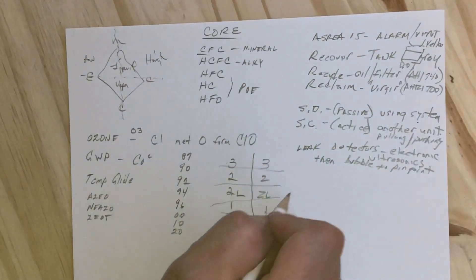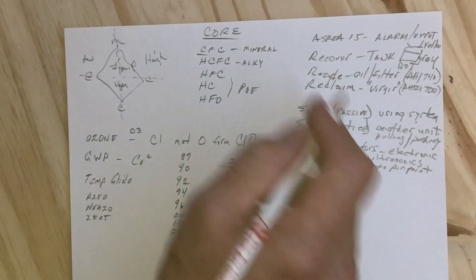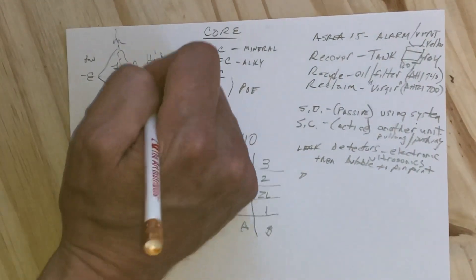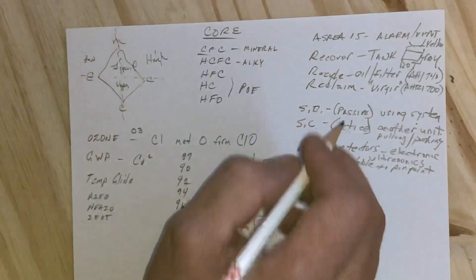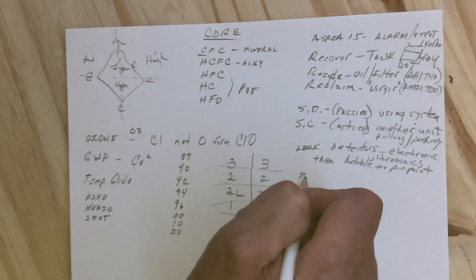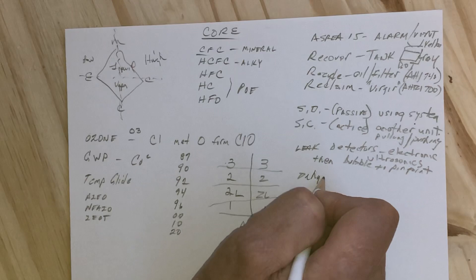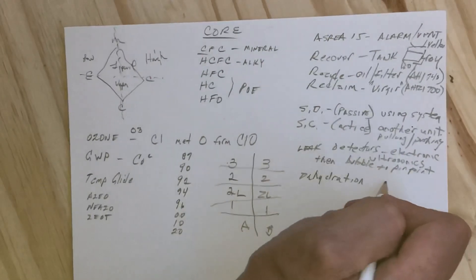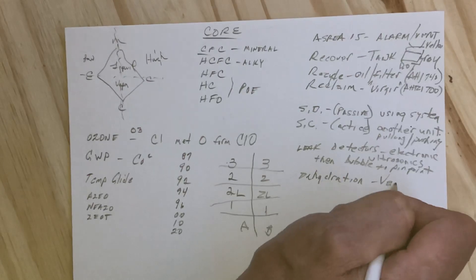After we recover, recycle, reclaim, some sort of major repair on the system would be considered any one of these. They have heat exchanger in some test questions I've heard, but dehydration is where we're going to get our vacuum down to 500 microns and hold.